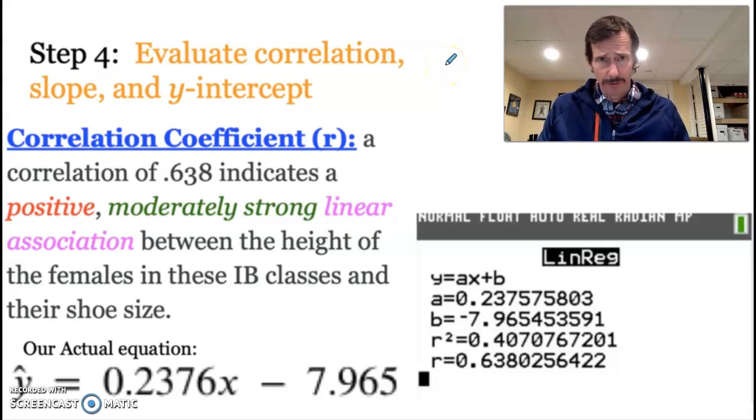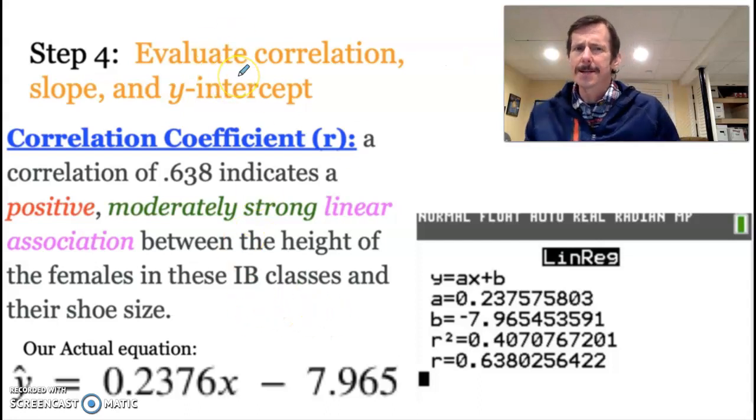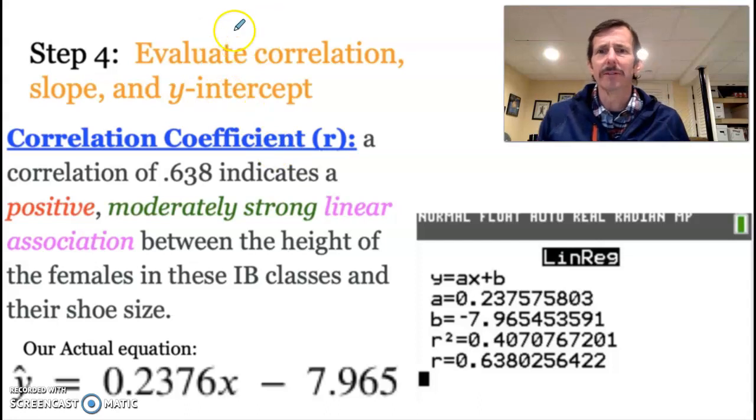All right, here we are, video two of linear regression. We are on step four, and this is the one that's probably the most, it's not difficult, but it's a little bit particular. So we are going to evaluate the three key values that were given in linear regression: the slope, the y-intercept, and the correlation.